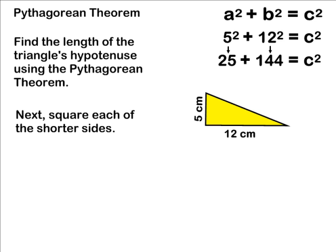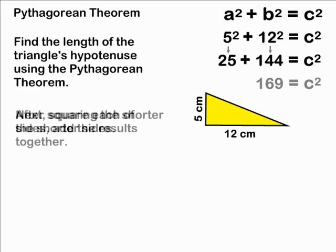After squaring the shorter sides of your right triangle, you must add those results together. 25 plus 144 is equal to 169. So at this point we have an equation that reads 169 is equal to c to the second power.